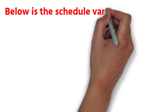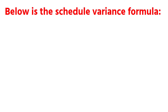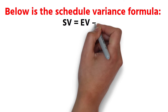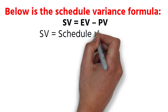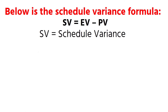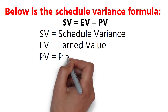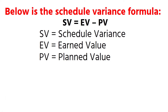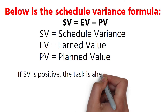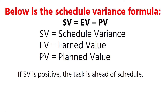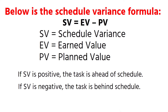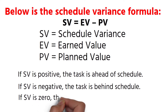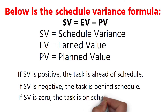Below is the Schedule Variance formula. SV = EV − PV. SV equals Schedule Variance. EV equals Earned Value. PV equals Planned Value. If SV is positive, the task is ahead of schedule. If SV is negative, the task is behind schedule. If SV is 0, the task is on schedule.